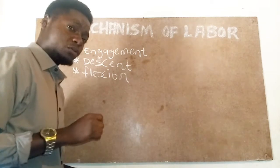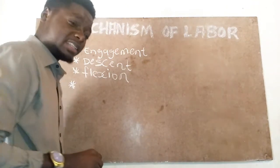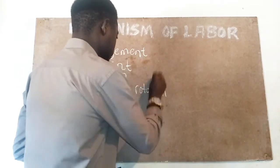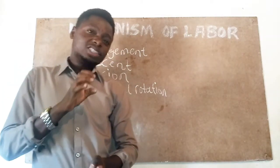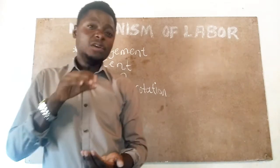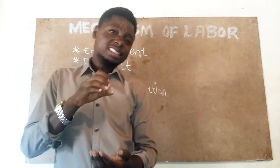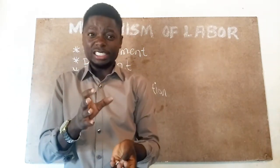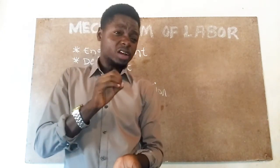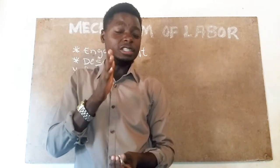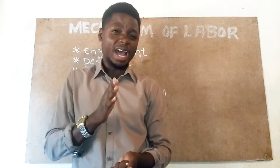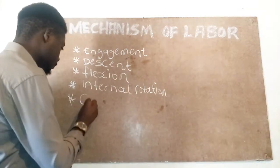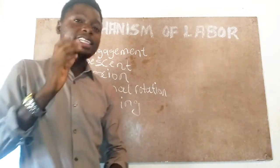The next movement is internal rotation. Internal rotation occurs as a result of the resistance of the pelvic floor muscles. The pelvic floor muscles have a gutter shape with a forward and downward slope, and this allows the fetus to rotate from either the right or left occipital transverse position at a 90-degree angle medially until it comes under the symphysis pubis or the suprapubic arch. Internal rotation results in crowning.